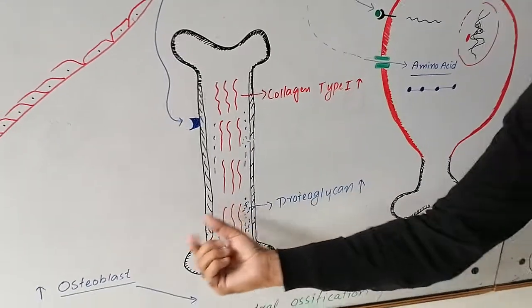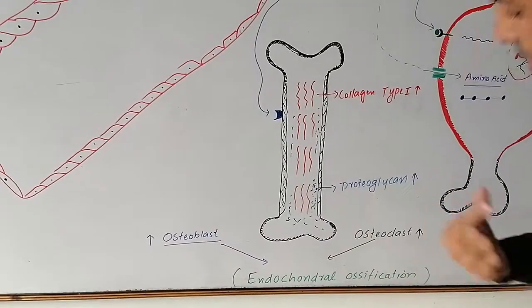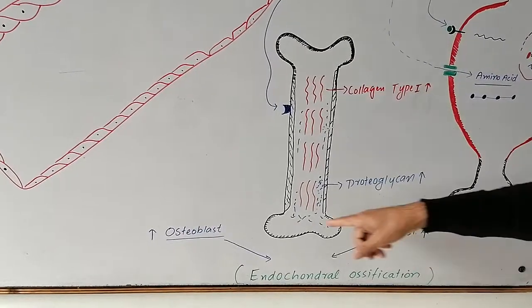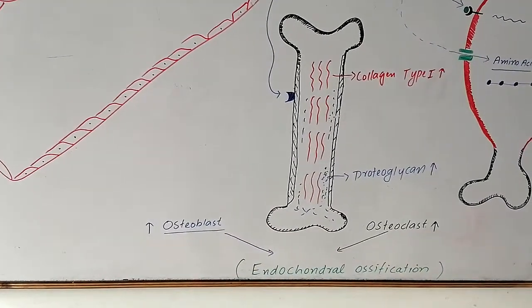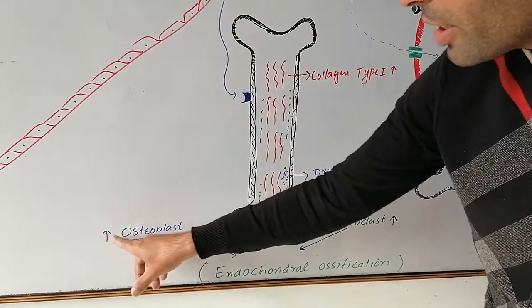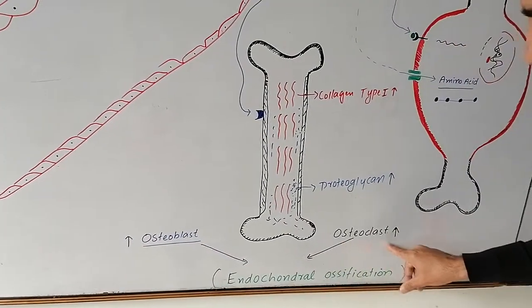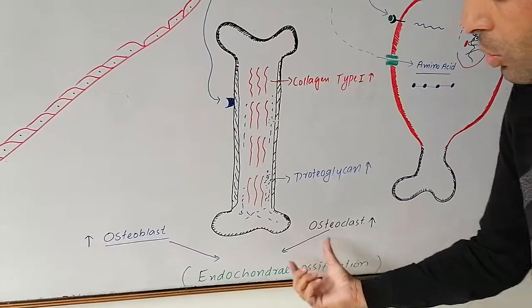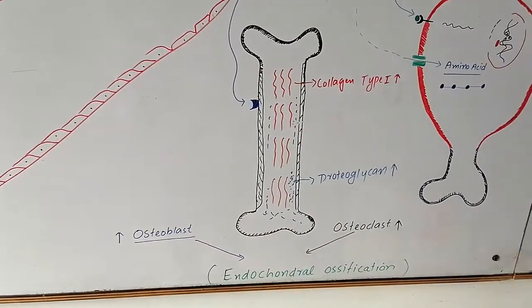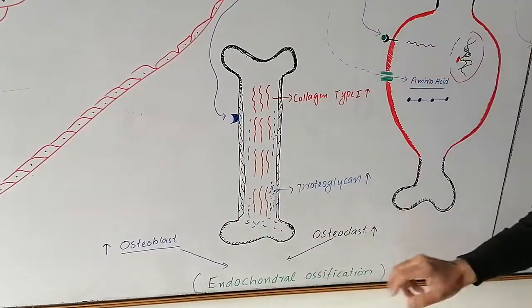The matrix and ground substance are present along with cells. The number of ground substance increases, collagen type 1 increases. Osteoclasts and osteoblasts increase their activity. Osteoblast activity increases, and osteoclast activity increases. Collectively, these activities increase bone size. This is called appositional growth.